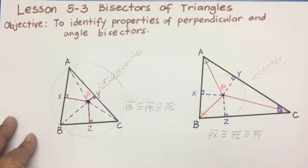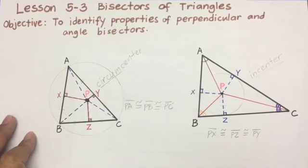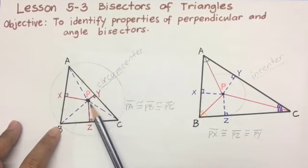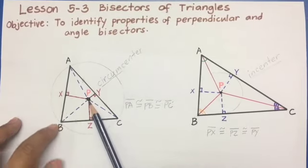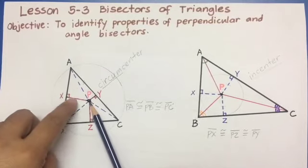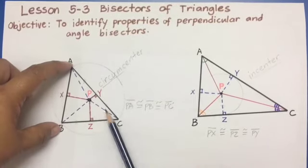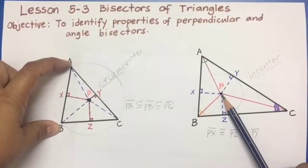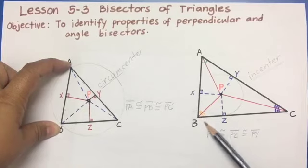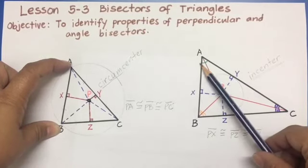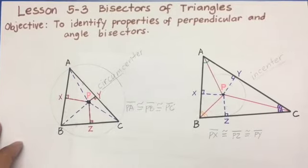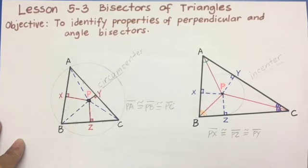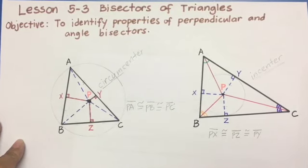So as a conclusion, what is the difference between circumcenter and in-center? The circumcenter is the point of concurrency between the perpendicular bisectors of the sides of the triangle. I hope you understand the lesson. We are open for questions and answers for those who are still in doubt. Thank you for watching.